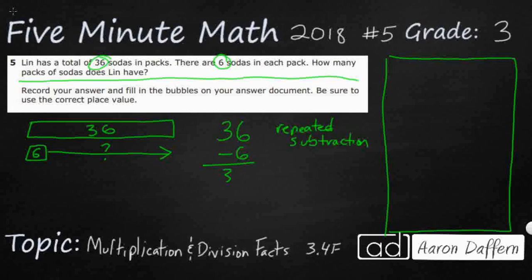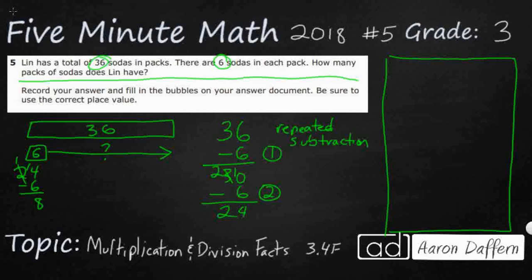36 minus 6 is 30 — that's one pack. Then I'm going to take 6 again. I need to regroup, so 10 minus 6 is 4, giving me 24 left — I've already taken two packs of 6 out. Let me write my 24 over here. Take away 6 — I need to regroup again — 24 minus 6 is 18. That's 3 packs so far. Then 18 minus 6 is going to be 12 — no regrouping necessary. I've got 4 packs so far.